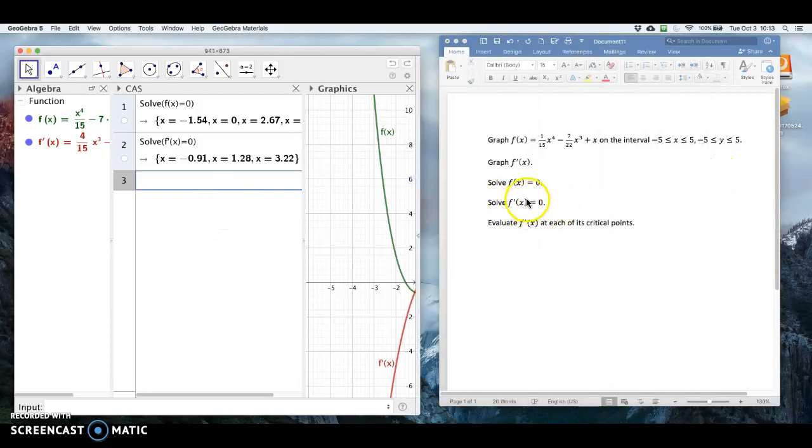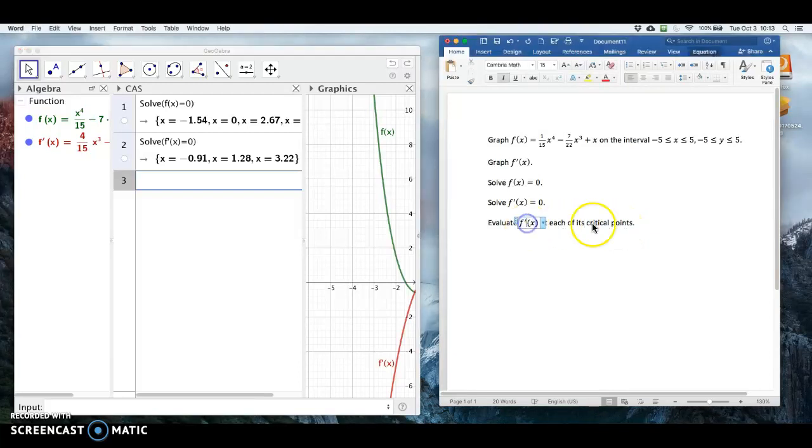All right, so once we've solved this, f prime equals zero, and the last step is I'm going to evaluate f of x at each of its critical points. Oh, excuse me, I don't want to evaluate the derivative. I'm going to change that to just f of x. So let's just evaluate f of x. What is the actual function value, the green function, at each of its critical points?